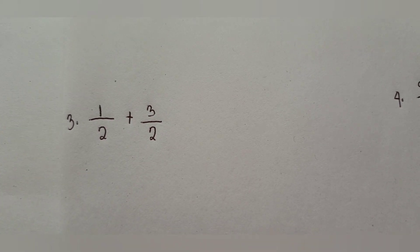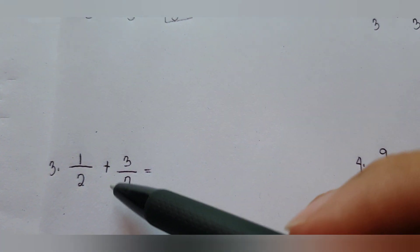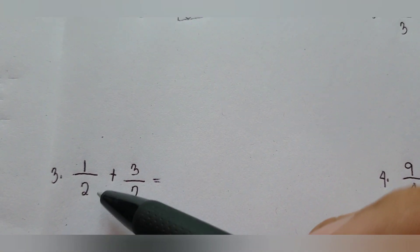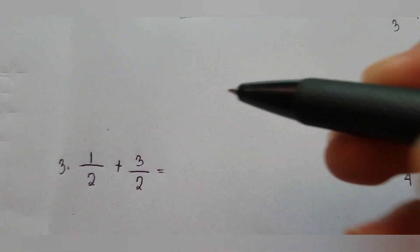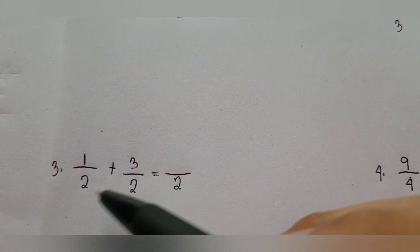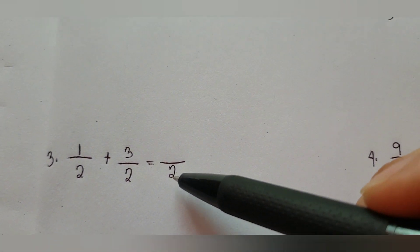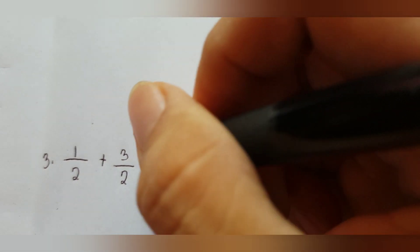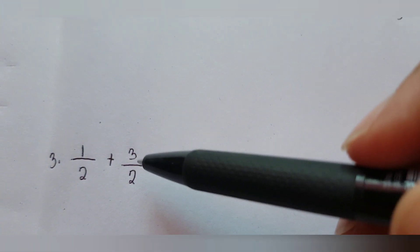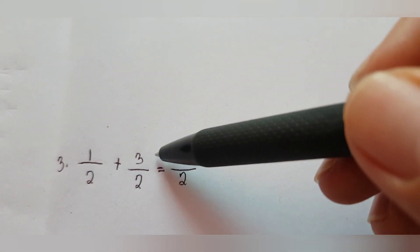For example number three, we have the same concept as example two. We have the fractions one-half and three-halves to add. Both fractions have the denominator two, so we copy two as the denominator in the resulting sum. Then we add the numerators directly: one plus three equals four.